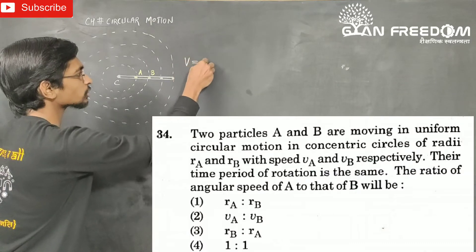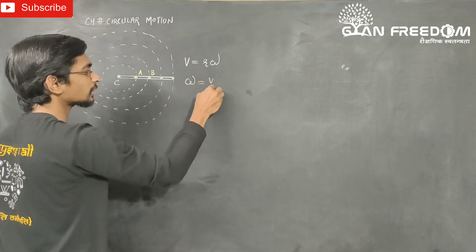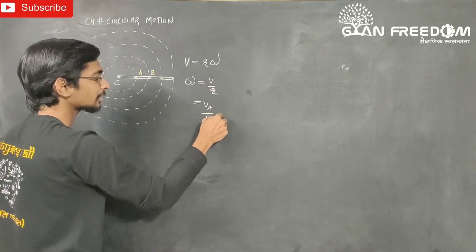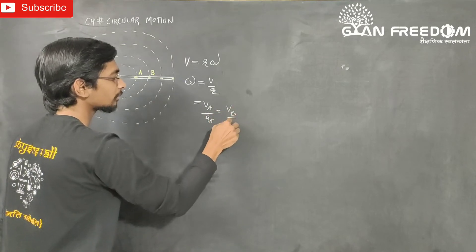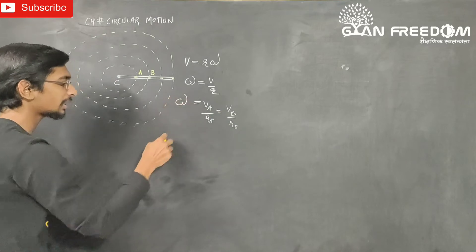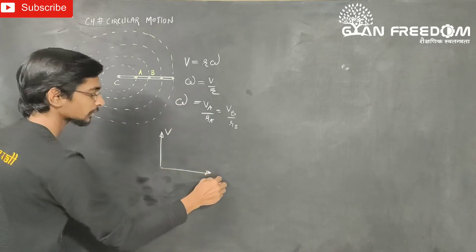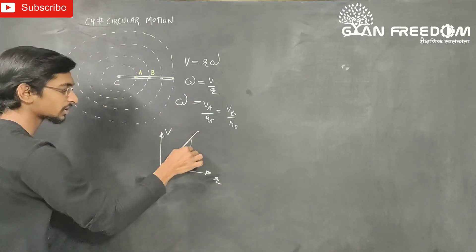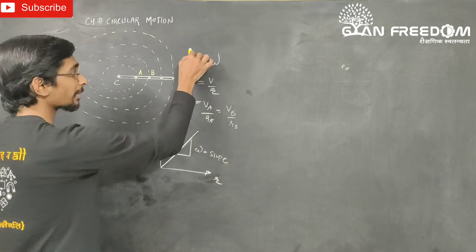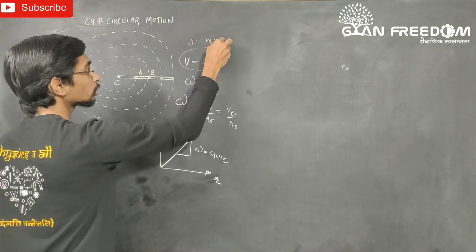I will explain. V is equal to R omega, so omega is equal to V by R. The ratio is the same: Va by Ra equals Vb by Rb. When you plot a graph of V versus R, it will be a straight line, which will have slope omega. Since Y equals mx, the answer is a straight line passing through the origin.